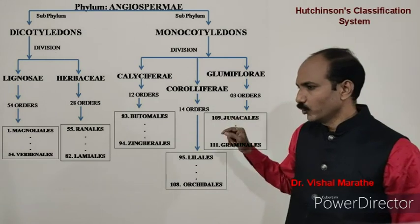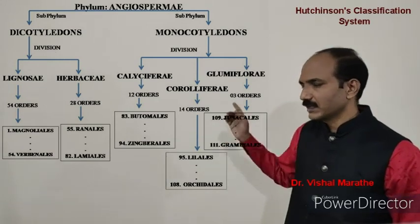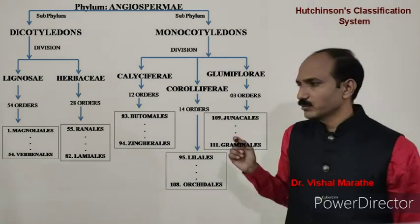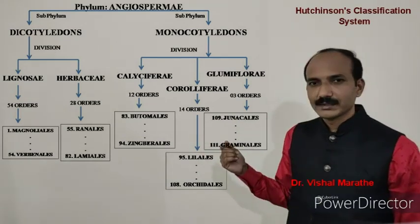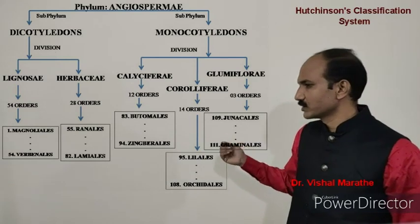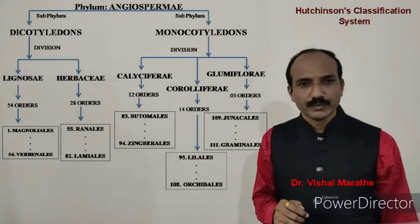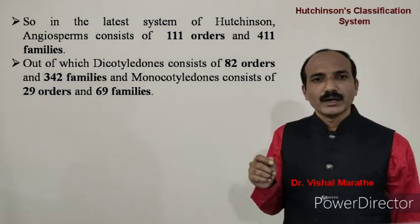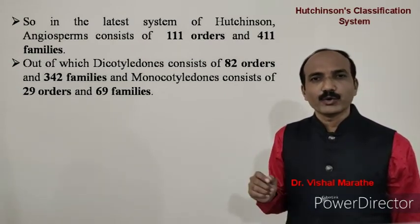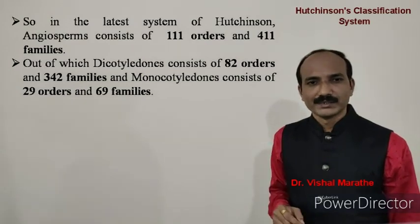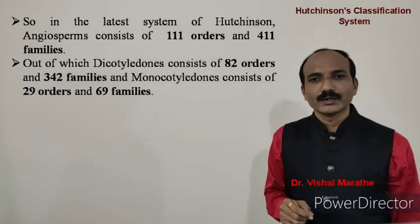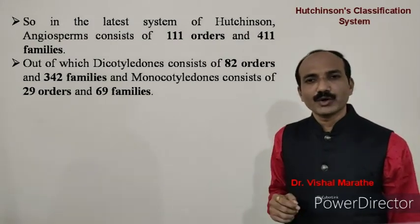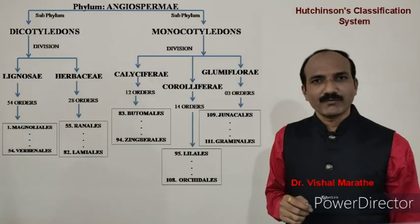In monocotyledons, three different divisions are considered, where Butomales are considered the most primitive and Graminales the most advanced. In the latest system of Hutchinson, angiosperms consist of approximately 111 orders and 411 families, of which dicots consist of 82 orders and 342 families, and monocots consist of 29 orders and 69 families.